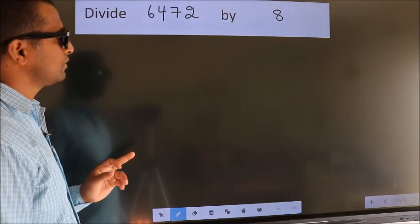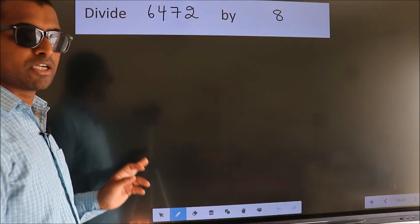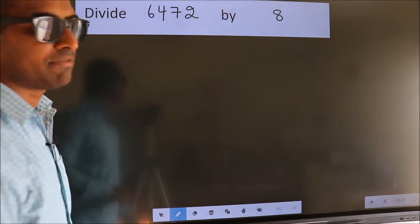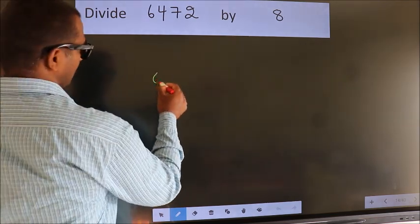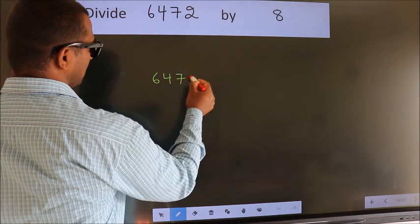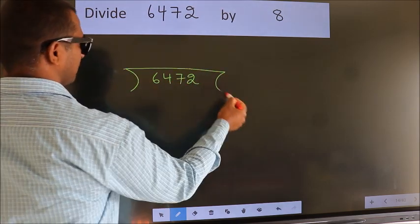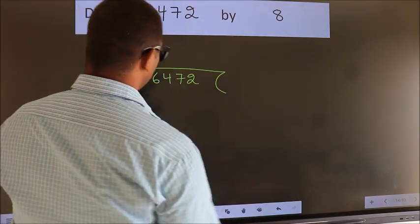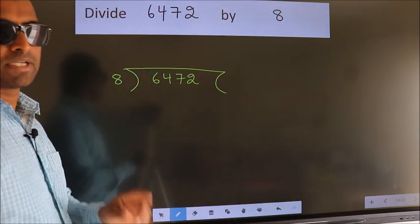Divide 6472 by 8. To do this division, we should frame it in this way. 6472 here, 8 here. This is your step 1.